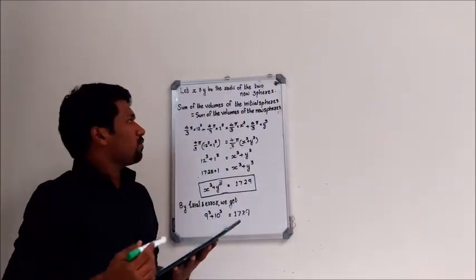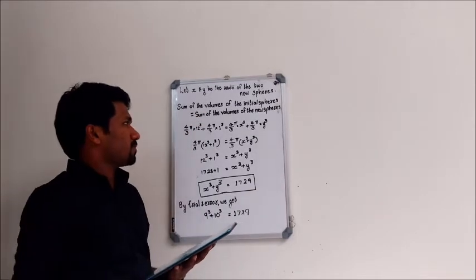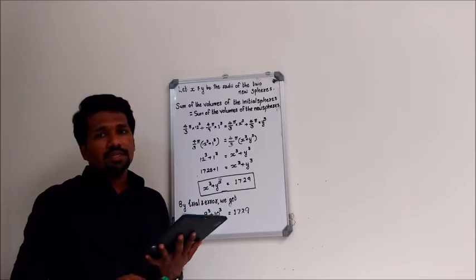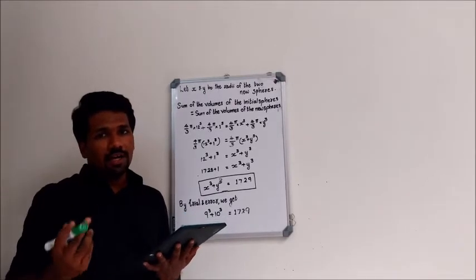Now what is the sum of volume of initial spheres and the new spheres? We know that for a sphere, 4/3 π R³ is the volume, where R is the radius of the sphere.